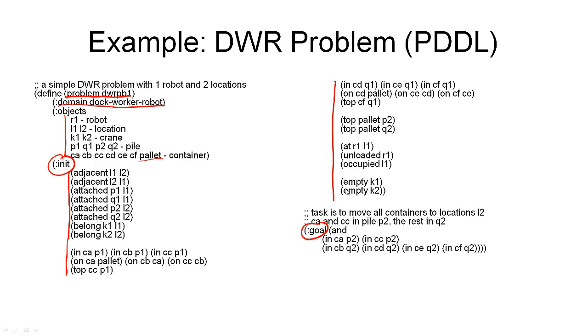That was the initial state, and now comes the goal. The goal is described as a conjunction, so all of these things must be true. And it's simply saying in which pile the different containers must be. CA must be in P2, CC in P2, and so on. And the other four containers must be in the pile Q2. So it doesn't specify the order in which the containers must be in those piles, just in which piles they must be.